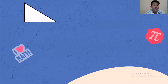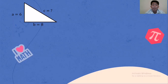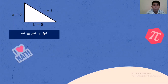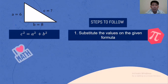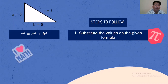Let's try an example. Given A is equal to 6 and B is equal to 8, what is the hypotenuse? Using the formula C squared equals A squared plus B squared. The steps to follow: number one, substitute the values into the given formula.